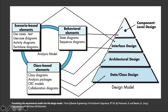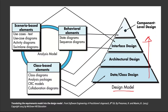We will proceed right now in discussing about the four types of the design model. We will talk about the design model from the data design going to the component level design. Each of the elements of the requirements model provides information that is necessary to create the four design models required for us to complete the specification of design.